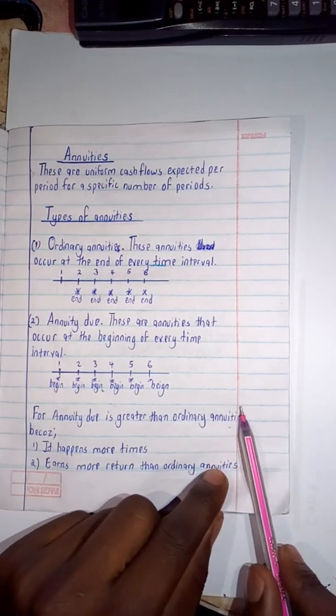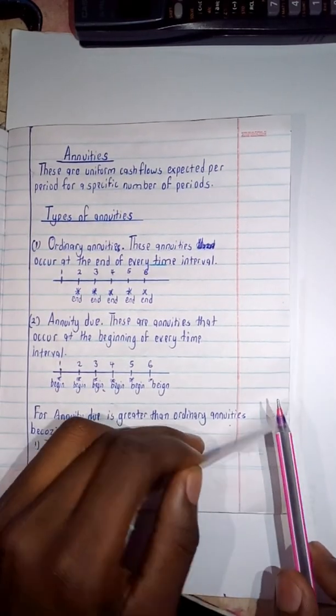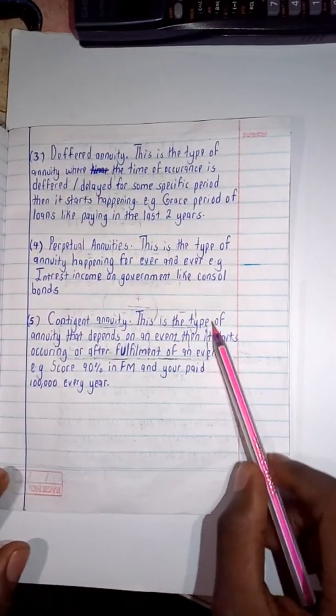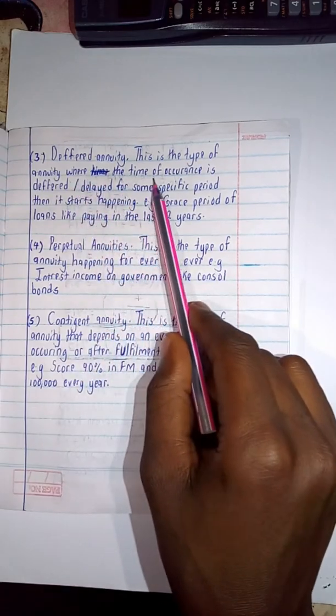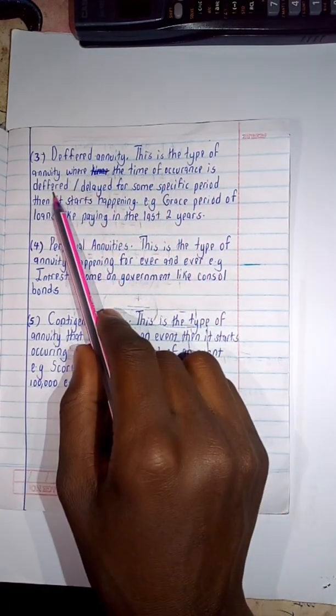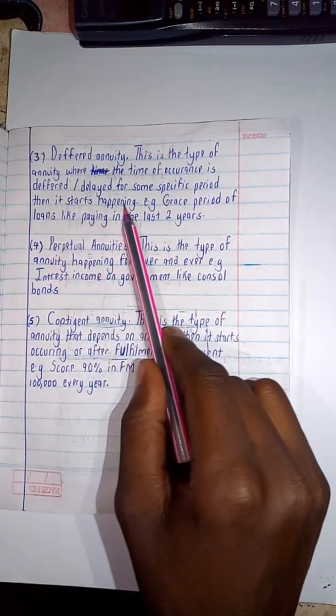Then we are having deferred annuity. This is the type of annuity where the time of occurrence is deferred or delayed for some specific period then it starts happening, for example grace period of loans like paying in the last two years.